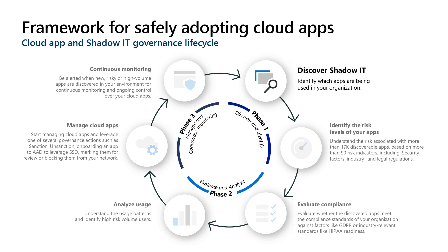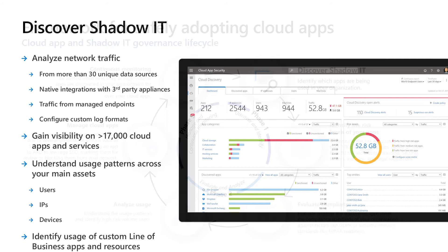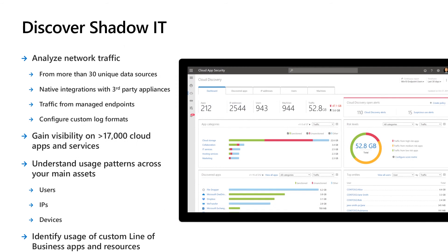Any journey must start somewhere, and ours starts at discovering what apps are being used in our organization. Integrate with more than 30 unique network appliances, utilize native integrations with third-party solutions, and get visibility of cloud usage from your managed endpoints. By leveraging an app catalog with more than 17,000 public detectable apps, we help organizations understand usage patterns across apps, users, devices, and IP addresses. Cloud App Security also enables you to configure your own line-of-business applications to uncover their usage patterns as well.